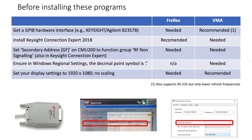Second, install the current version of Keysight IO Libraries Suite / Connection Expert. For FreeRes that is recommended; it also supports some National Instruments and Rohde & Schwarz hardware. VMA really requires the Keysight software — you're going to need that. It's basically free and comes with the Keysight hardware.